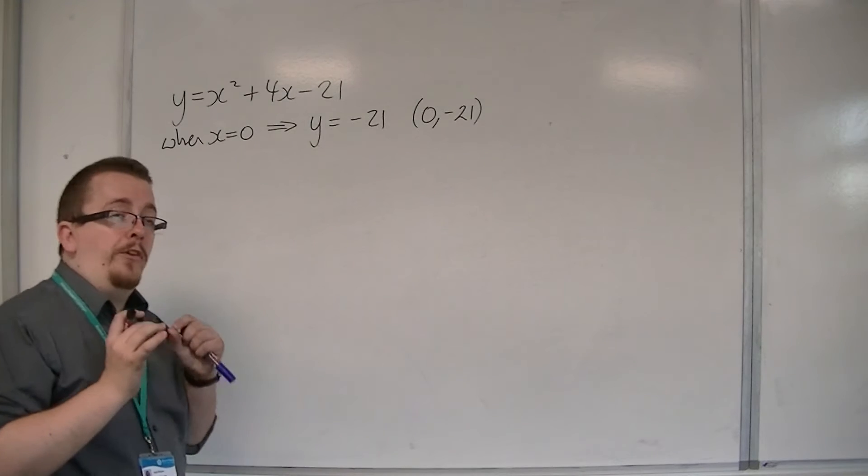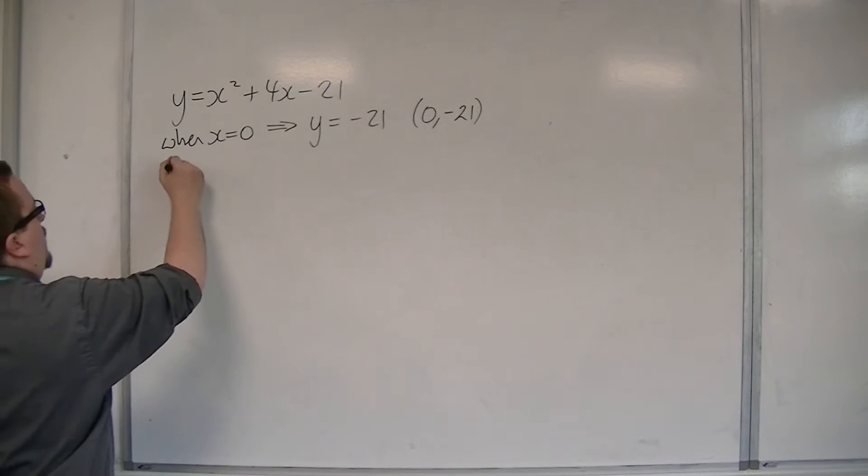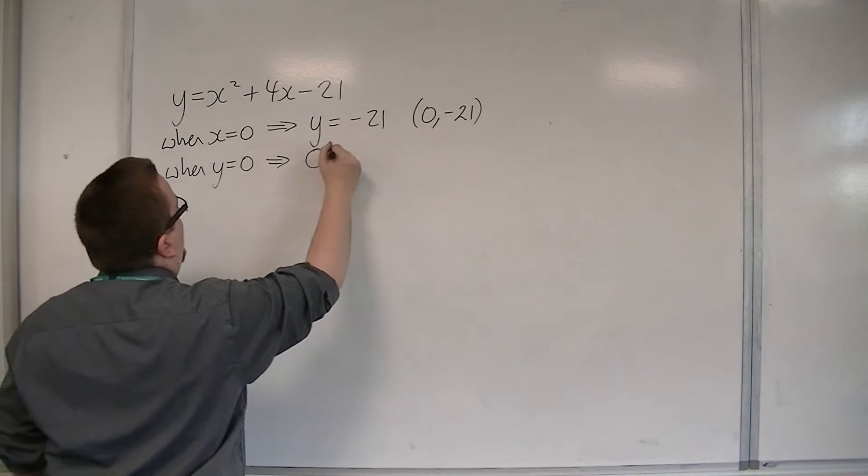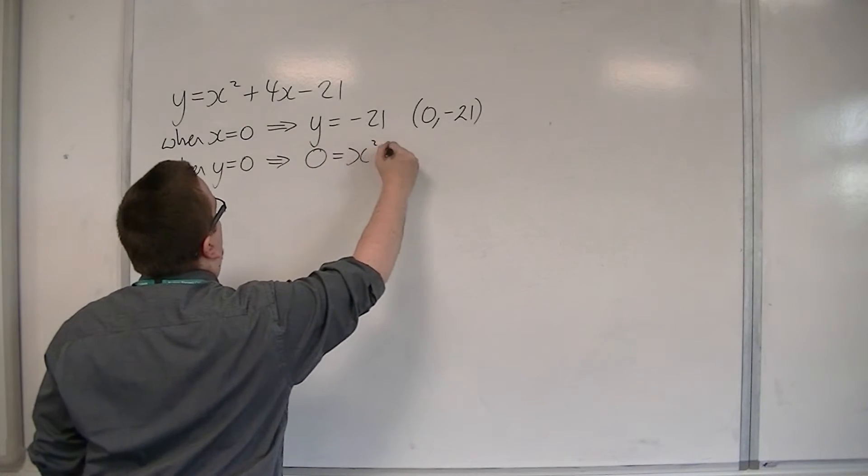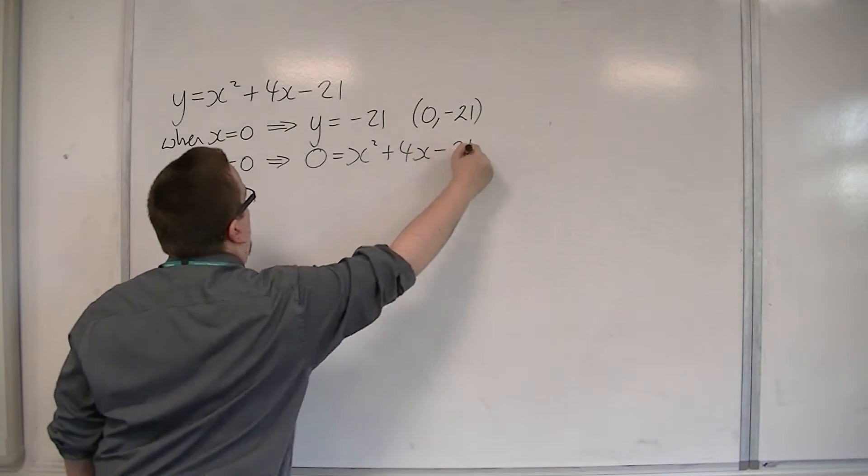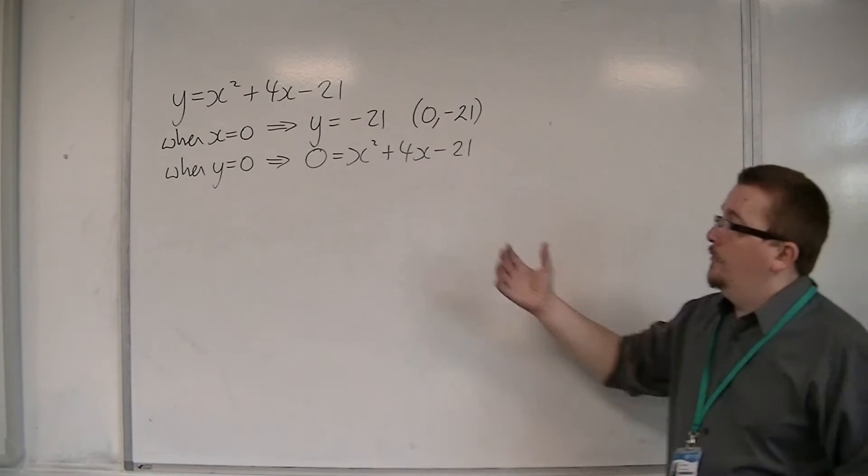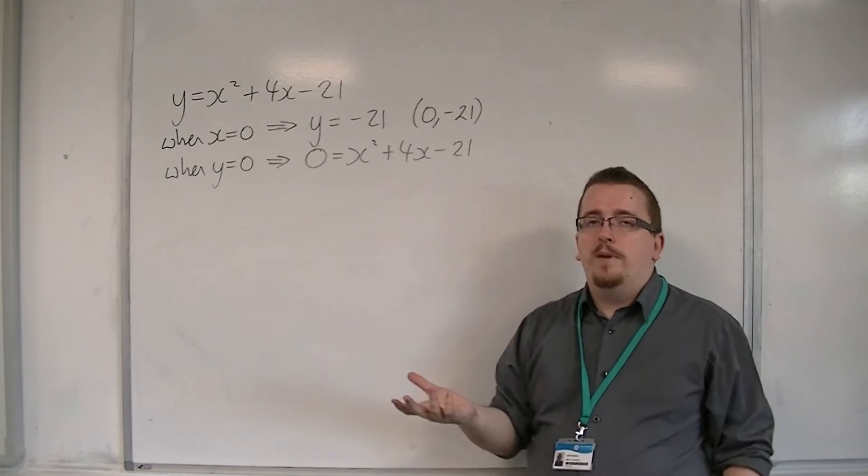I also want to be able to find where it crosses the x-axis. So that's when I substitute y is equal to 0 into the equation. So I get 0 is equal to x squared plus 4x minus 21. Now, without knowing how to go from there, that's not really going to be of much good to me.